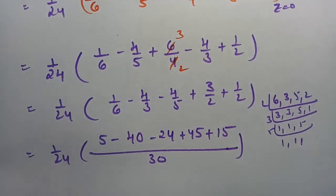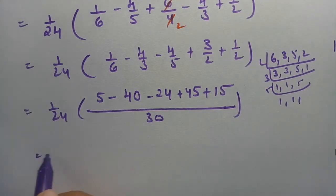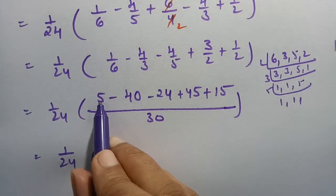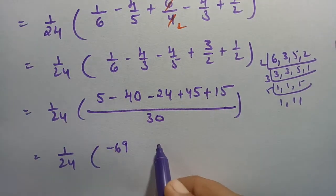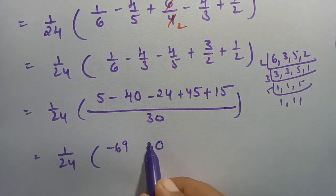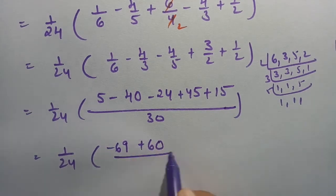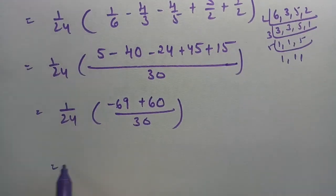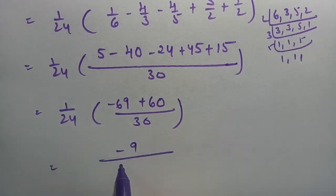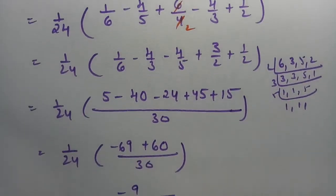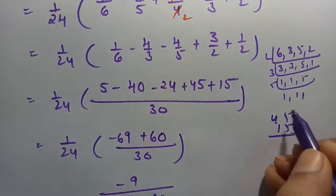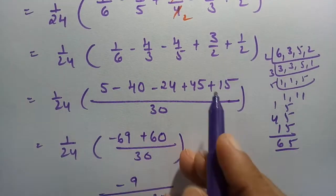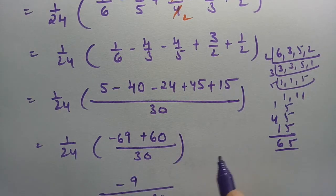The LCM is 30. So this is 1/24 times (result over 30). Computing: 1/6 gives 5, minus 4/5 gives minus 24, minus 4/3 gives minus 40, plus 3/2 gives 45, plus 1/2 gives 15. Summing: 5 minus 24 minus 40 plus 45 plus 15, and then 65 minus 64 gives 1, so the numerator is 1 over 30.